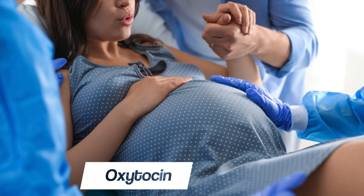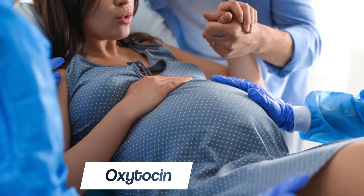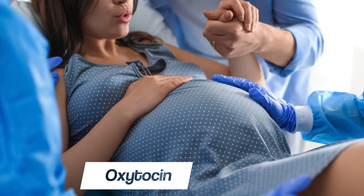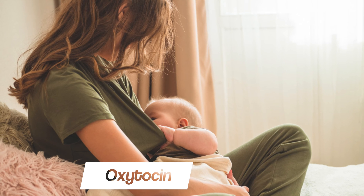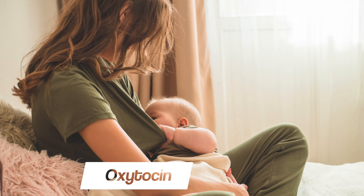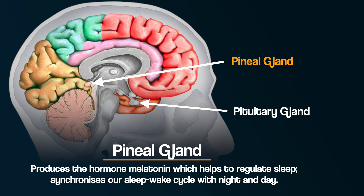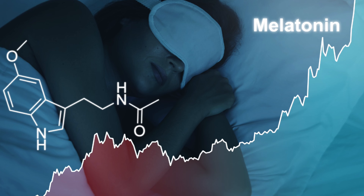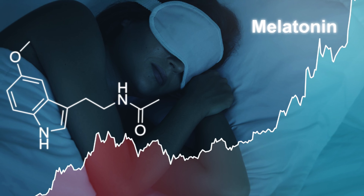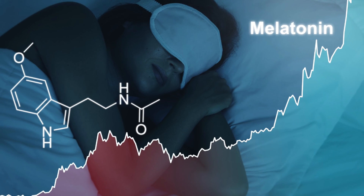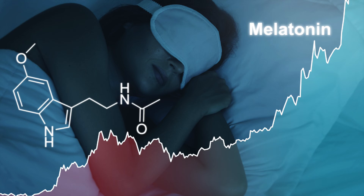In women, oxytocin is involved during childbirth by sending signals to their uterus to contract. It also influences bonding between the mother and her baby during breastfeeding. Secondly, the pineal gland is also found in the brain and produces the hormone melatonin. Melatonin helps regulate our sleep and synchronizes our sleep-wake cycle with night and day. As your melatonin levels increase, your body temperature and blood pressure drop, preparing your body for sleep.